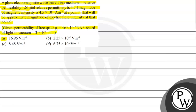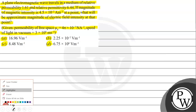Option A: 16.96 volt per meter. Option B: 2.25 × 10⁻² volt per meter. Option C: 8.48 volt per meter. Option D: 6.75 × 10⁶ volt per meter.